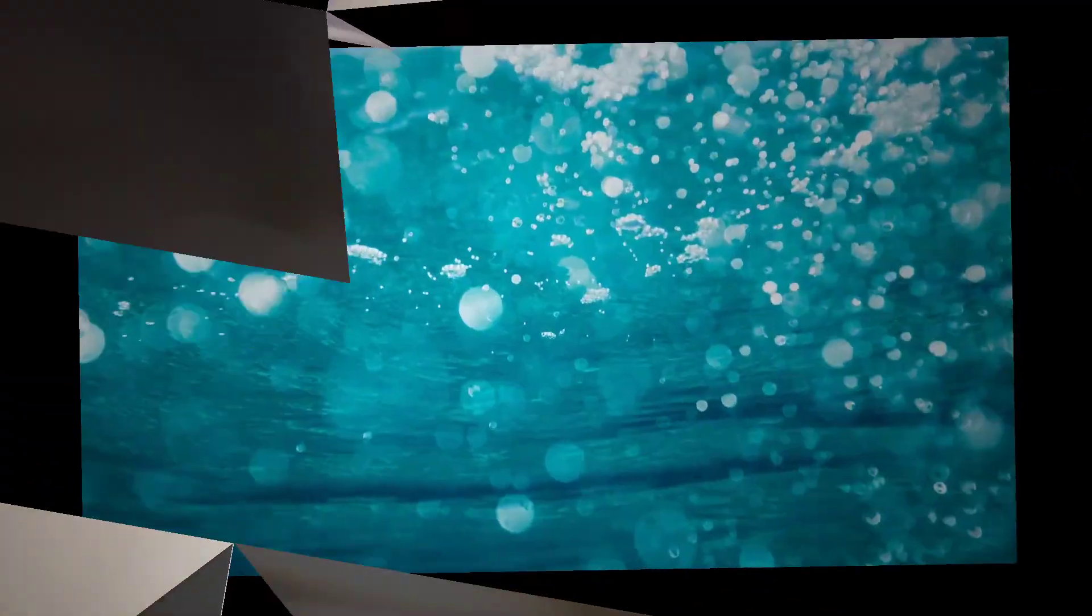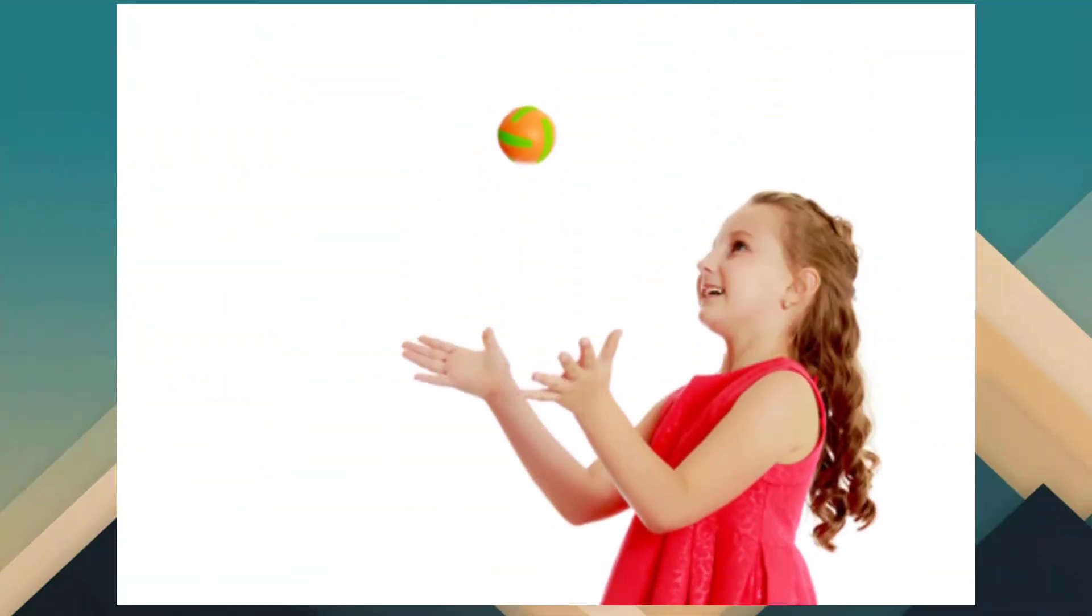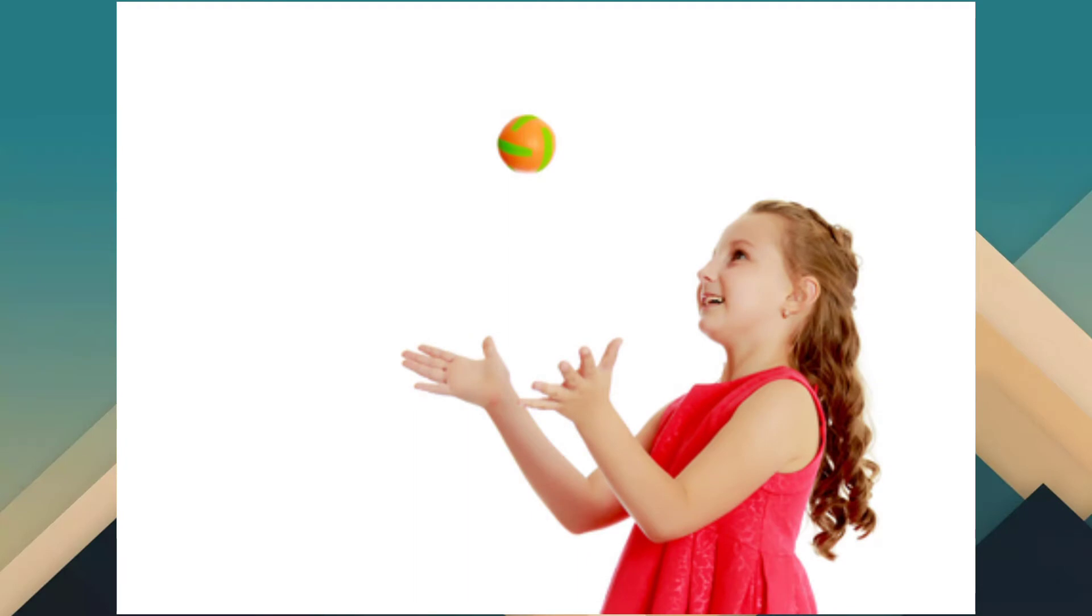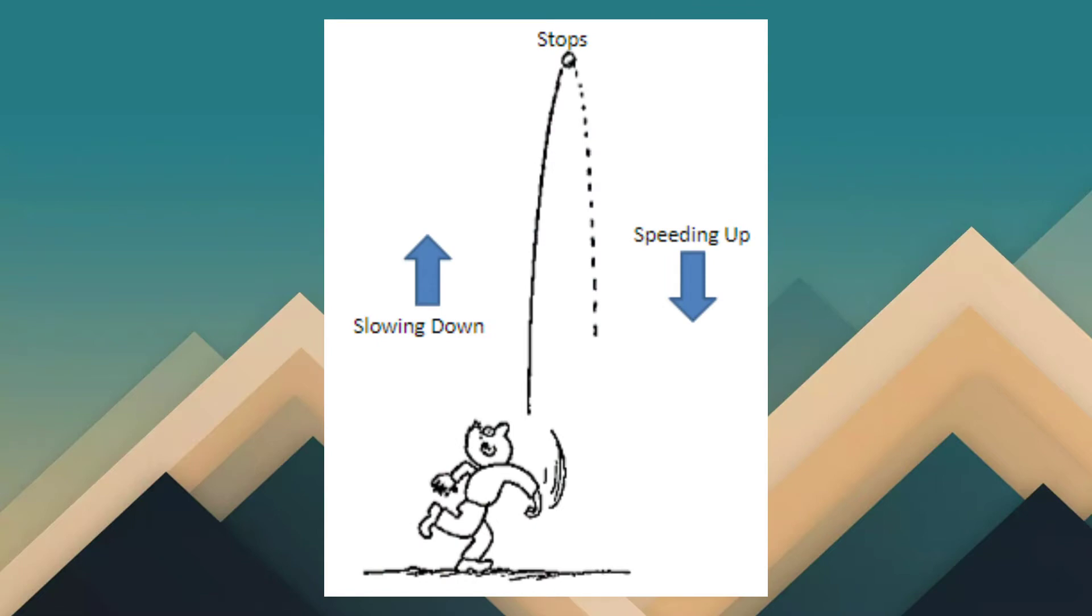So let's start with gravity. What happens when we throw a ball up into the air? It first rises up, then seems to stop and then falls to the ground. Why does it fall down? Why doesn't it keep going upwards?